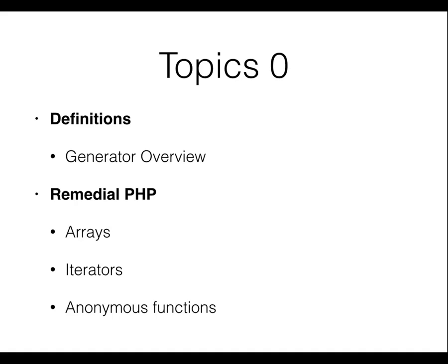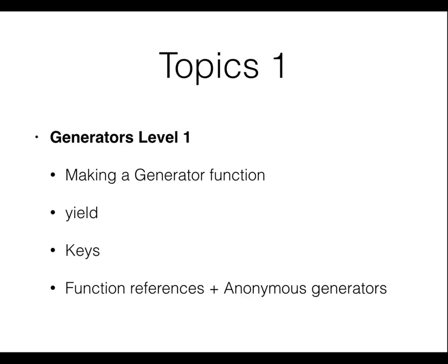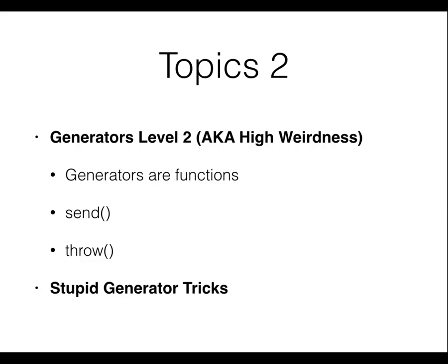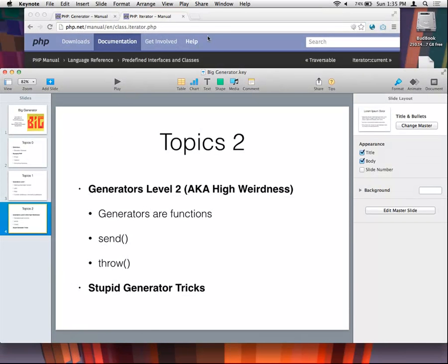I'm going to give an overview and then do some pseudocode typing into an editor. The overview covers: definitions of what generators are, some remedial PHP including arrays, iterators, and anonymous functions. Then we'll talk about making a generator function, the yield command, returning keys, function references, anonymous generators, and high weirdness level 2 involving send and throw. We'll finish with stupid generator tricks, time allowing.